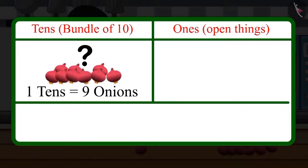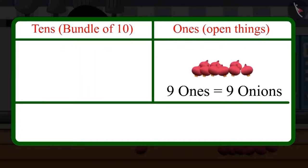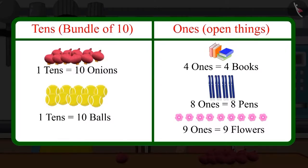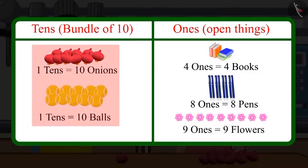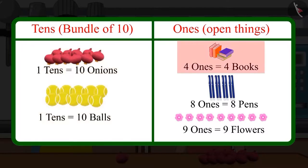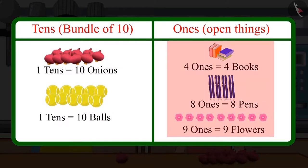Ok Choto, tell me something. Can 9 onions together make 1 ten? No mummy, for this we will need 1 more onion. This will be 9 ones. Absolutely right, Choto. This means that 10 onions, or 10 balls — all those things present in a group of 10 — make tens, because they are in a group of 10. But 4, 8, and 9 things, which are less than 10, they are ones, and we count them individually.